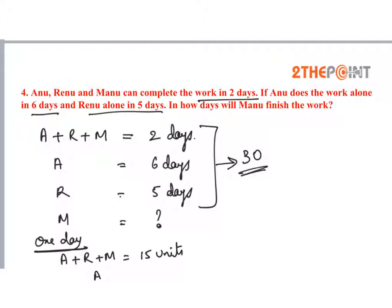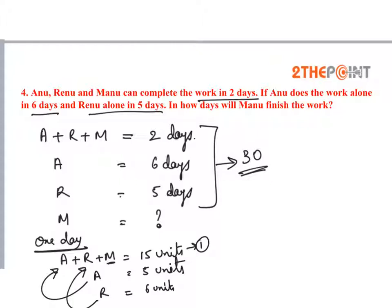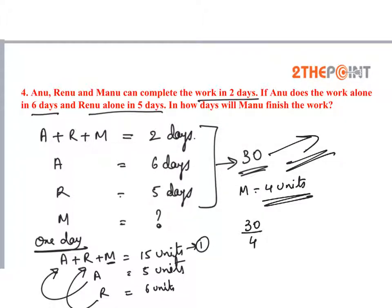Work done by Anu alone is 30 by 6, which equals 5 units per day. Work done by Renu alone is 30 by 5, which equals 6 units per day. To find the one-day work done by Manu, substitute the values of Anu and Renu into the first equation. We get work done by Manu per day equals 4 units. To complete 30 units, Manu takes 30 by 4, which equals 6 and 1/2 days.